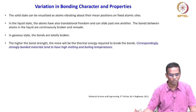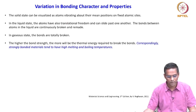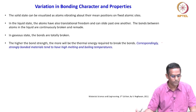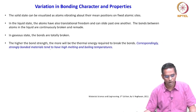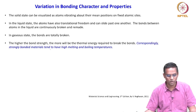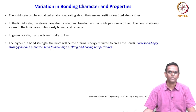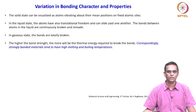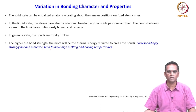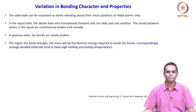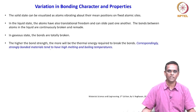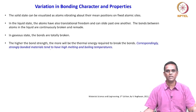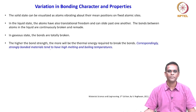The higher the bond strength, the more thermal energy will be required to break the bonds. Correspondingly, strongly bonded materials tend to have high melting and boiling temperatures. This correlates with the potential well diagram — a steeper potential well has something to do with bond strength as well as melting point. We will carry this idea along as we connect atomic basis to material properties.